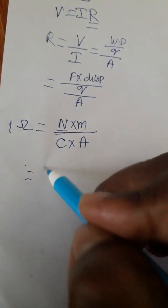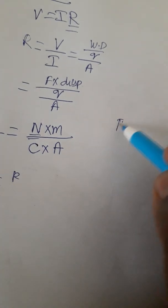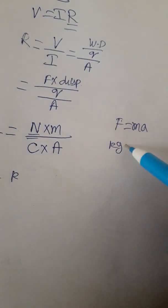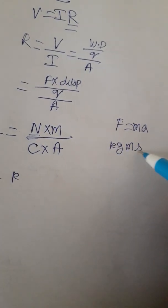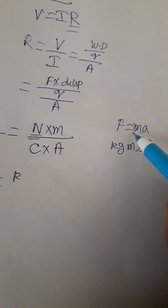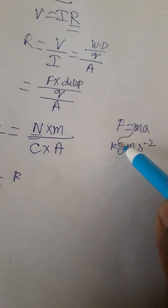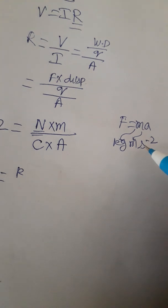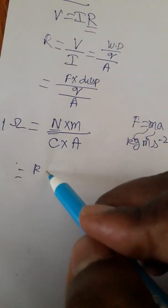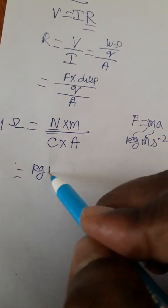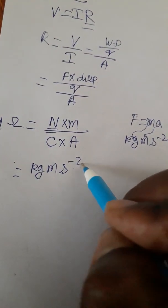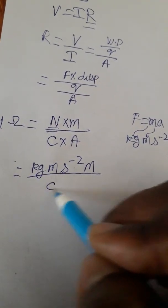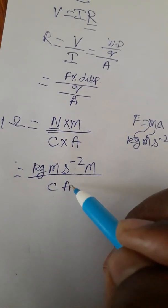Newton's — we know force F is equal to MA, that means kg·m·s⁻², where kg is mass and acceleration is meter per second square. So Newton we got kg·m·s⁻², into meter, divided by coulombs·ampere.